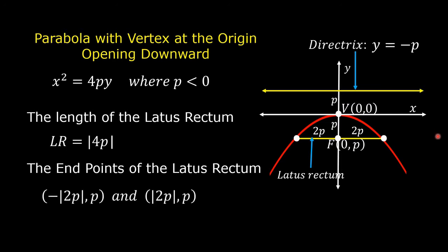These are the endpoints of the latus rectum: negative absolute value of 2p comma p, and absolute value of 2p comma p.